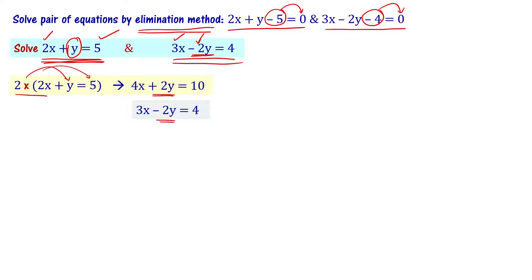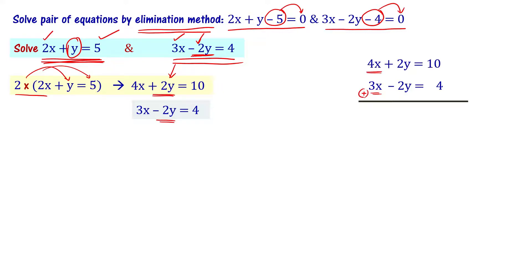Now we add the two equations to eliminate the y variable. Adding 4x plus 2y equal to 10 and 3x minus 2y equal to 4: 4x plus 3x gives 7x, and 2y minus 2y equals 0, and 10 plus 4 equals 14. So 7x equal to 14.